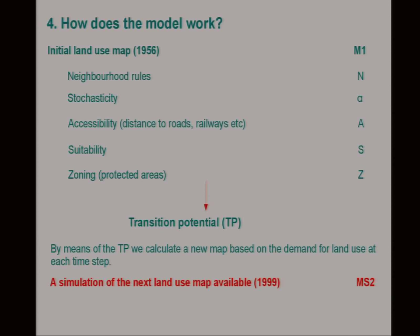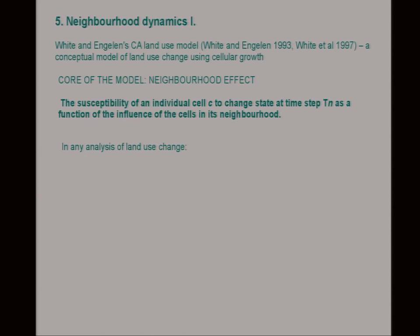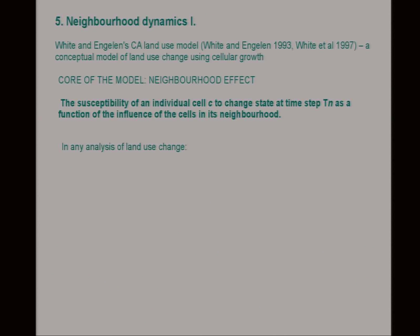The first thing we do is, in a process we call calibration, we simulate our next land use map — which in my case was 1999, so quite a long time step. And it's a pretty straightforward model.